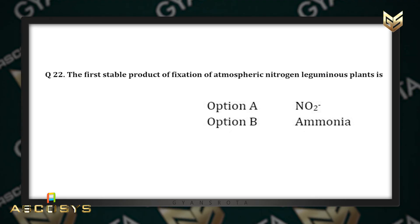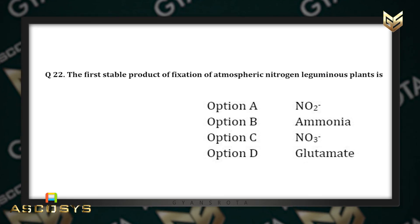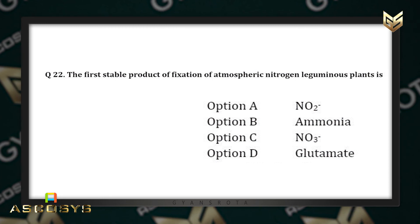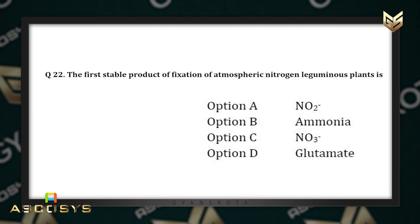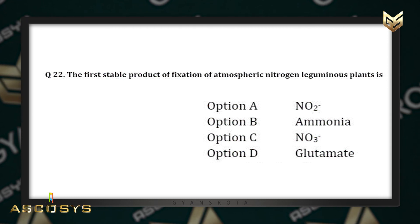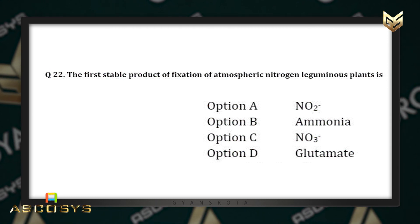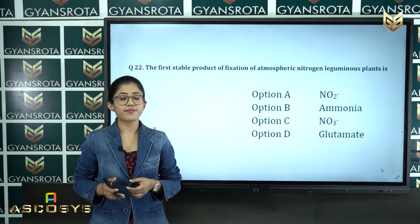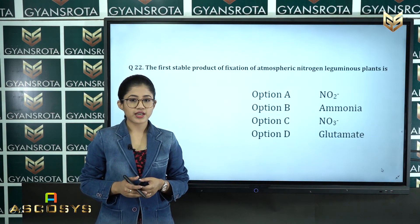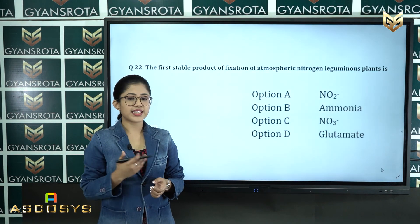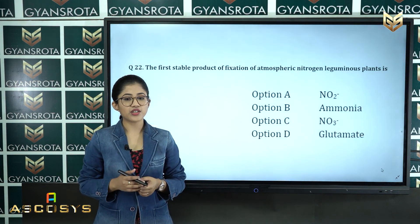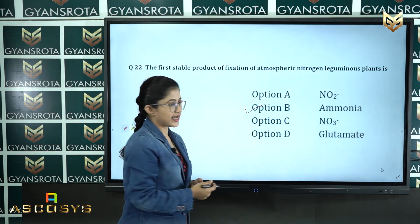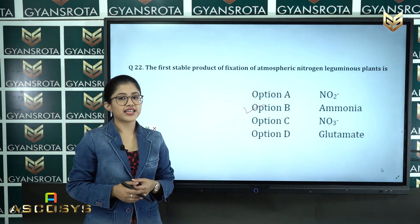Question number twenty-two: the first stable product of fixation of atmospheric nitrogen in leguminous plants is — option A: nitrite, option B: ammonia, option C: nitrate, option D: glutamate. This is from the chapter mineral nutrition. The correct answer is option B — ammonia is the first stable product of atmospheric nitrogen fixation.